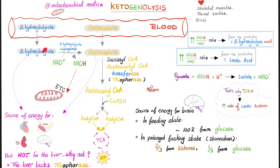In ketogenolysis, you can burn these ketone bodies and get some energy — that's the good news. Bad news: they can lead to acidosis. When beta-hydroxybutyrate is becoming acetoacetate, this increases NADH, which is a source of energy. But when you increase the NADH to NAD ratio, this will favor the production of lactic acid — another acid that can lead to more acidosis. That's why patients with diabetic ketoacidosis and too many ketone bodies can also have lactic acidosis. It makes sense if you understand biochemistry.